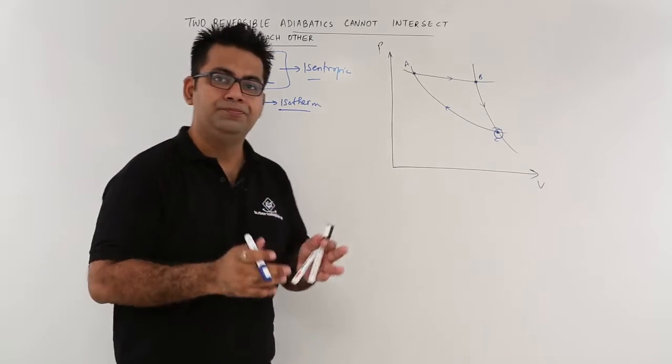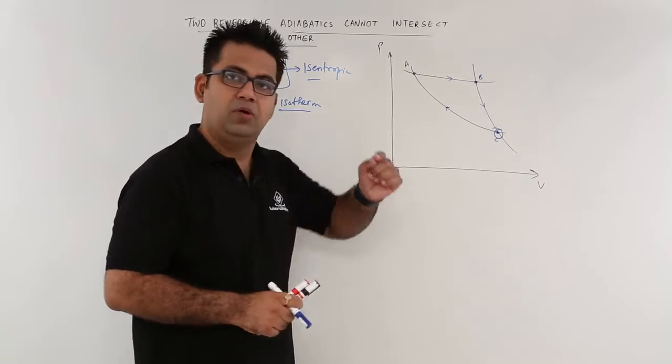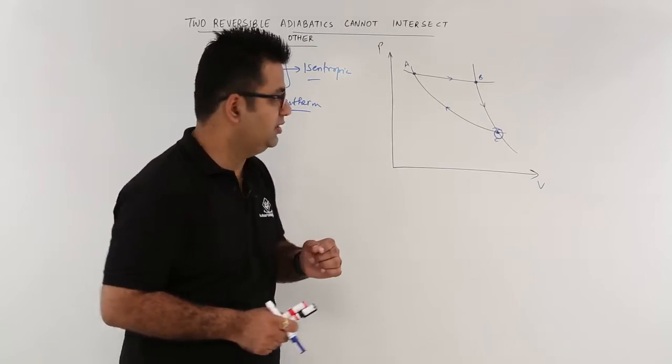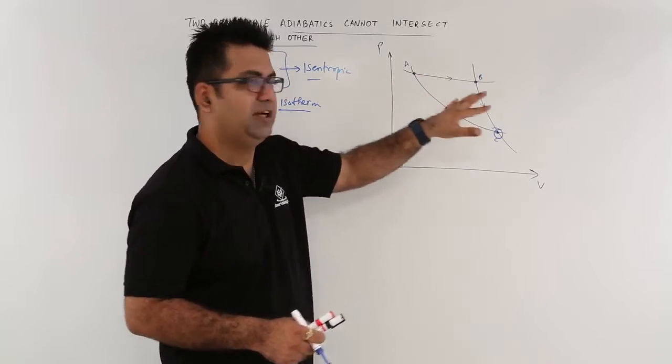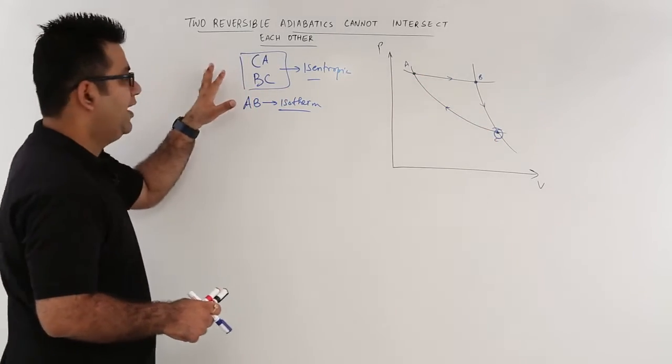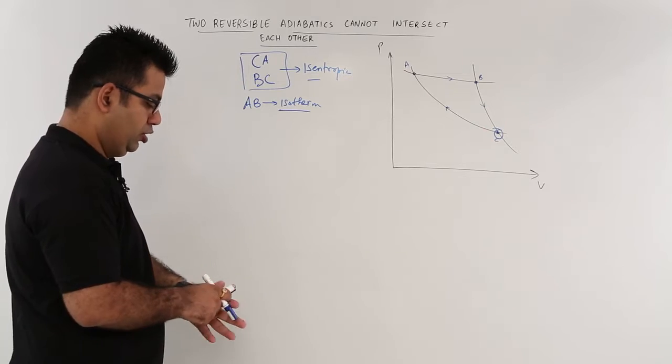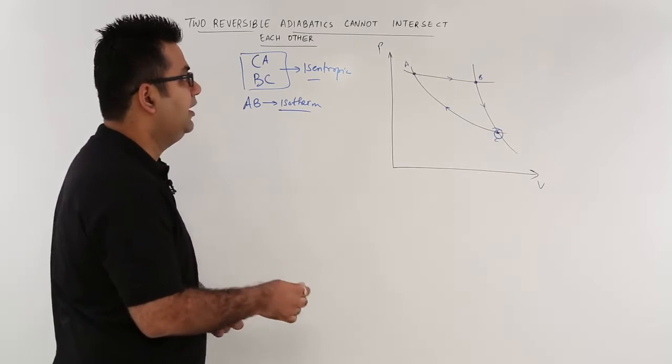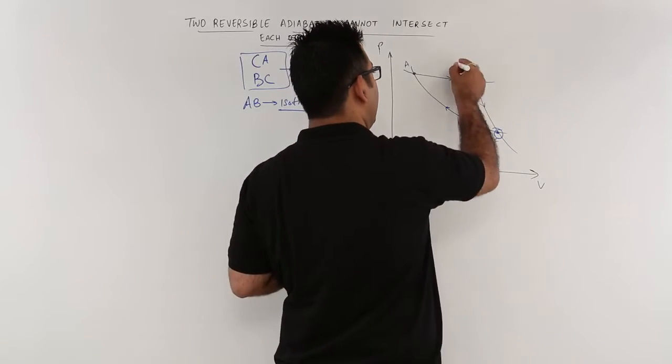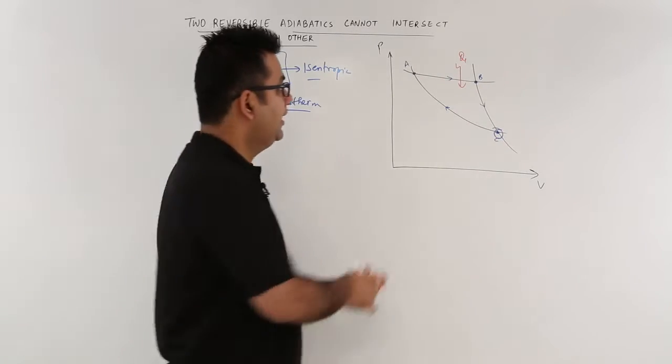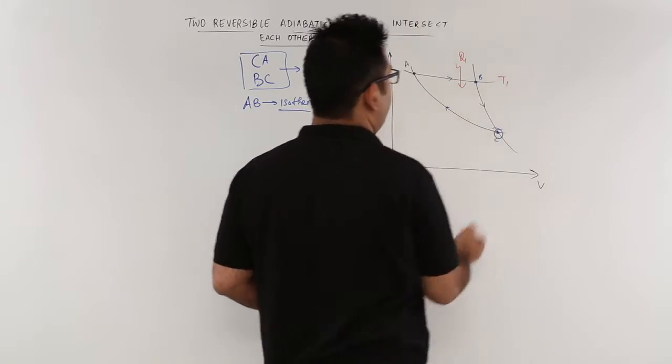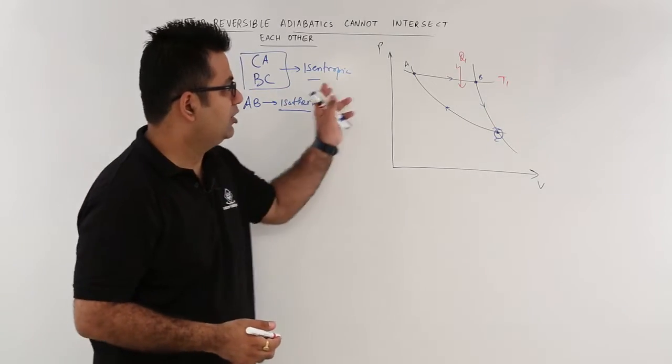Now as we know, you can only have heat interaction with the surroundings at constant temperature and not at constant entropy. So you will have some heat addition at this end. Let us say this is heat addition Q1 and the temperature is T1 at which this isotherm is operating.